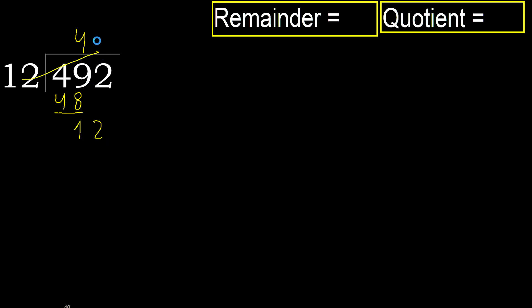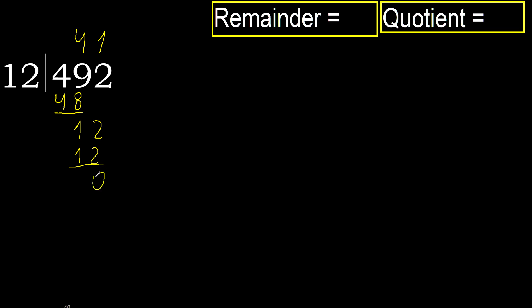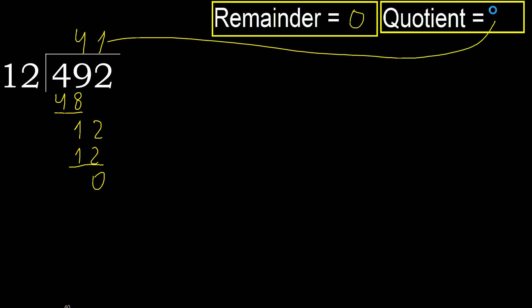12 multiplied by 1 is 12. That is not greater. Ok, subtract. Next — there is no more number, therefore we finish it.